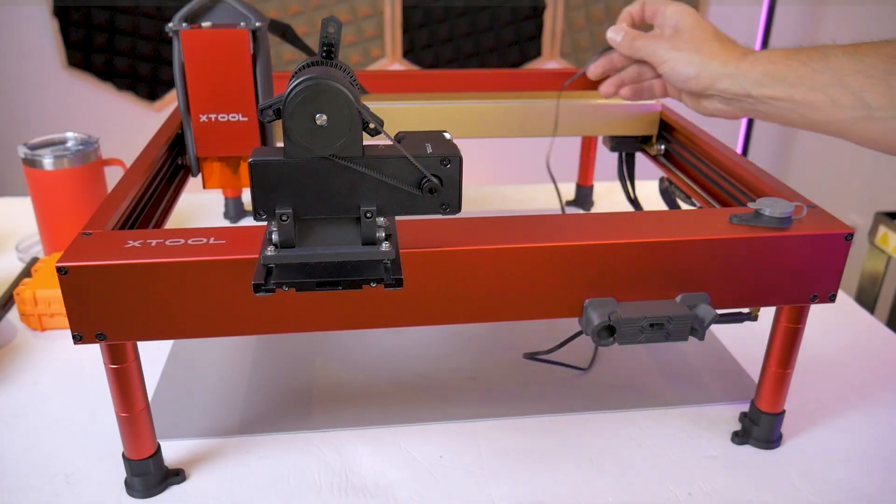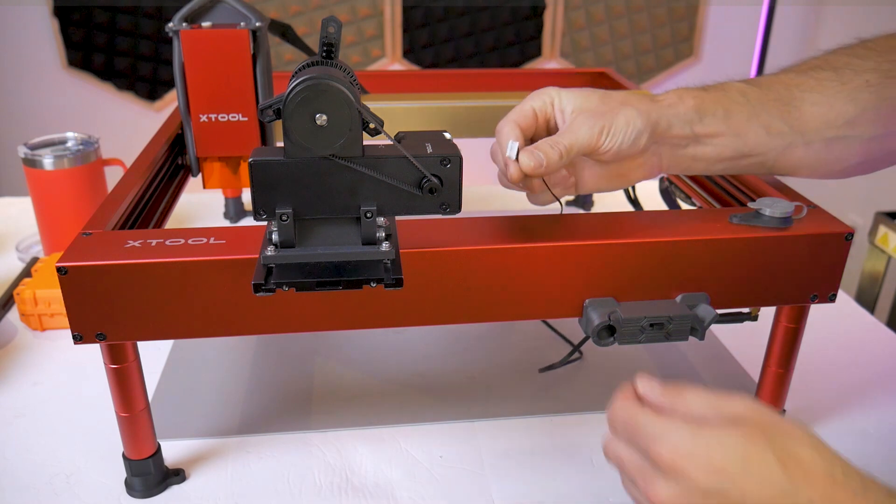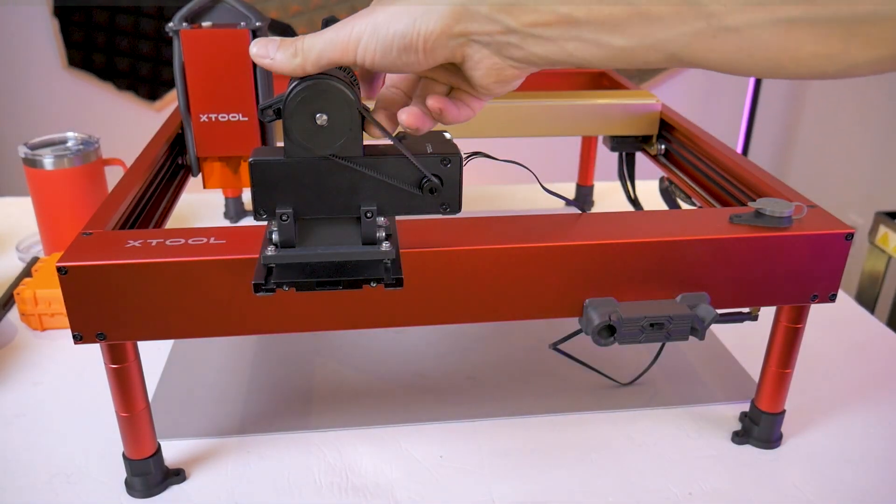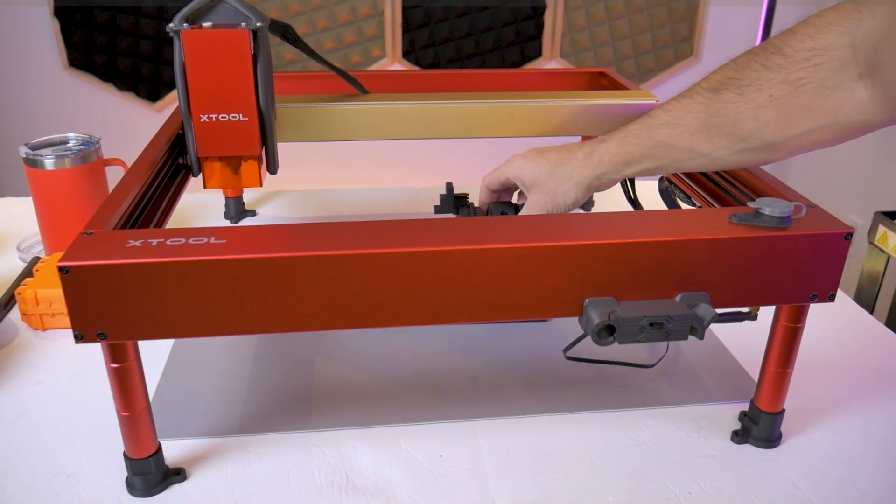Now we're ready to make the final connection to the RA2 so we'll take the free end of the harness which is the six pin connector side and plug it into the RA2 motor.